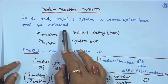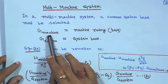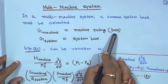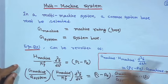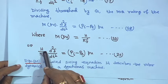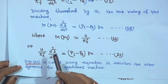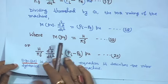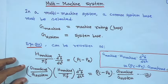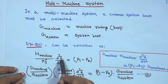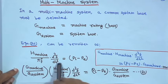In a multimachine system, a common system base must be selected. Instead of G, we write G_machine for the machine rating base and G_system for the system base. The swing equation can then be written as: (H_machine / πf) × (d²δ/dt²) = P_i − P_e. If you multiply both sides by G_machine, then: G_machine × H_machine × (d²δ/dt²) / πf = (P_i − P_e) × G_machine in mega watts.